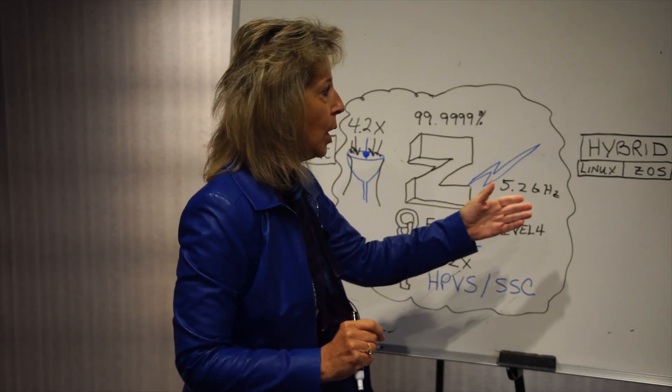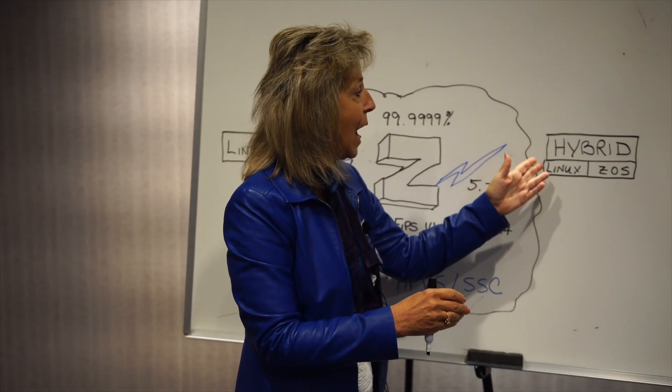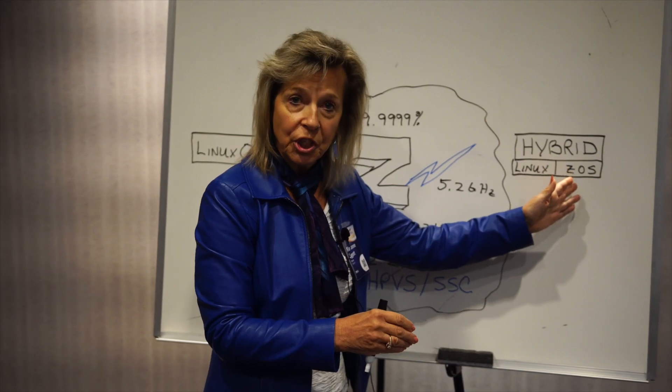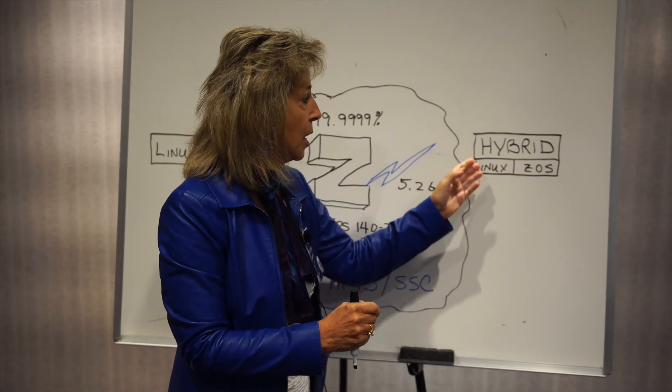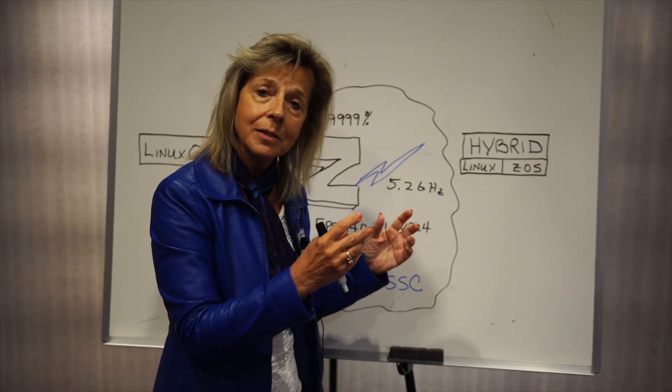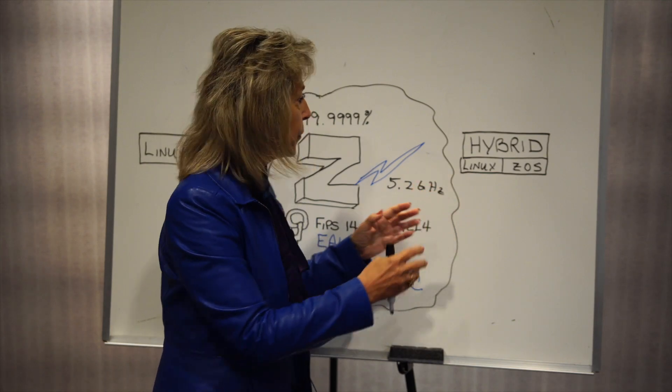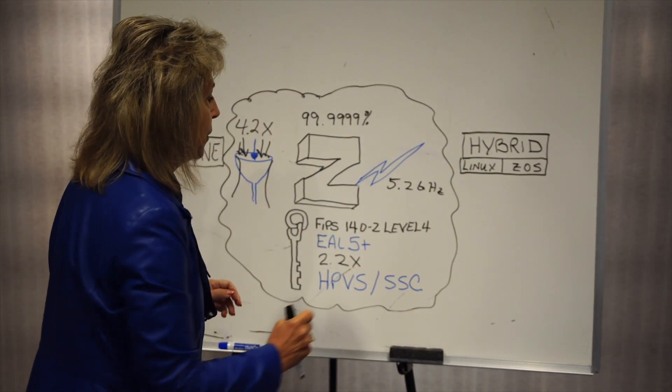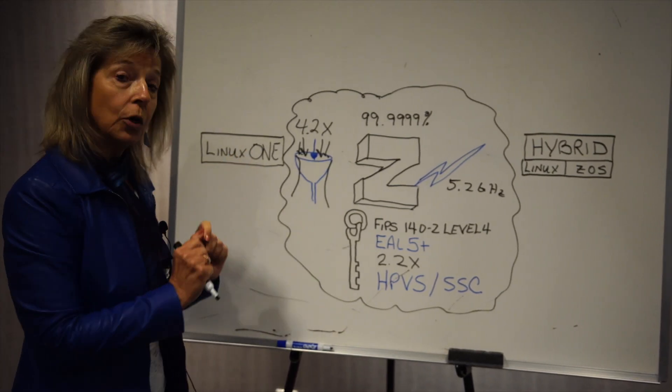The second one would be a hybrid Z server which has not only our traditional operating system such as the OS but then it also has separate LPARs that you would run your Linux on premise cloud in. So this is the opportunity for the Z server for your cloud.